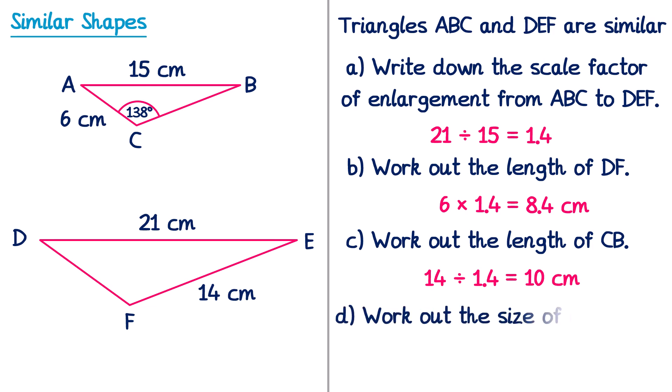For the final part, we need to work out the size of angle DFE. Since the shapes are similar, the angles must remain the same. So angle DFE will be the same as the corresponding angle on shape ABC, which is 138 degrees.